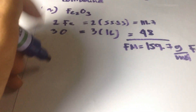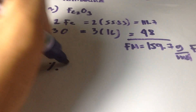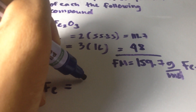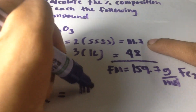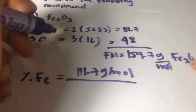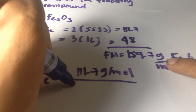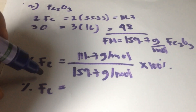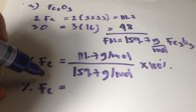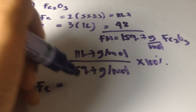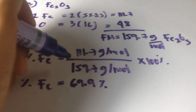We need to calculate the percent of each element. The percent of iron is equal to 111.7 grams per mole over the formula mass of 159.7 grams per mole, times 100%. So, the percent of iron equals 111.7 divided by 159.7 times 100%, which gives us 69.9% iron.